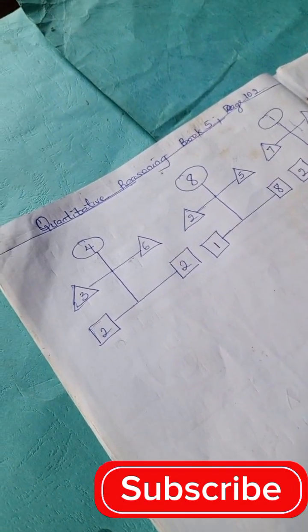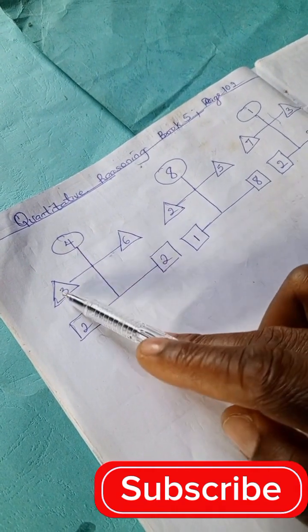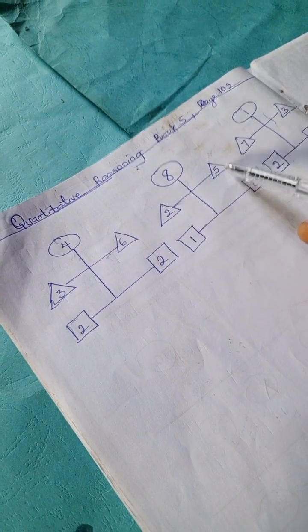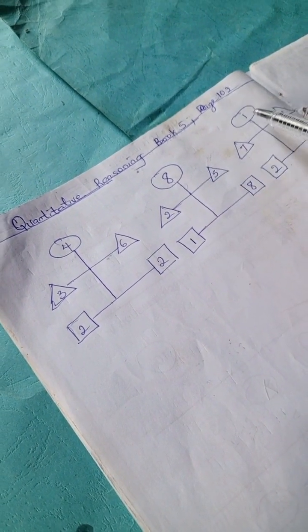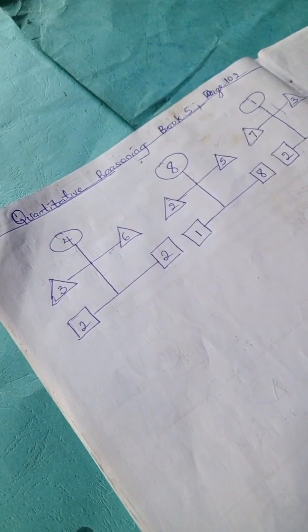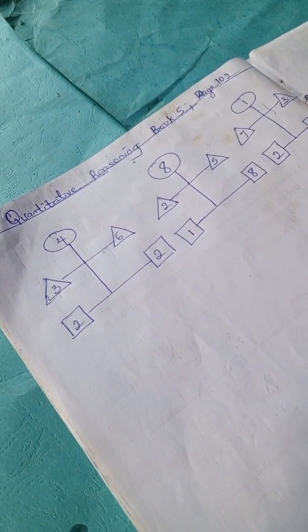We have this problem: 4, 3, 6, 2, 2, and here we have 8, 2, 5, 1, 8. Here we have 1, 7, 3, 2, 2. Let's look at this example and see what happened here.